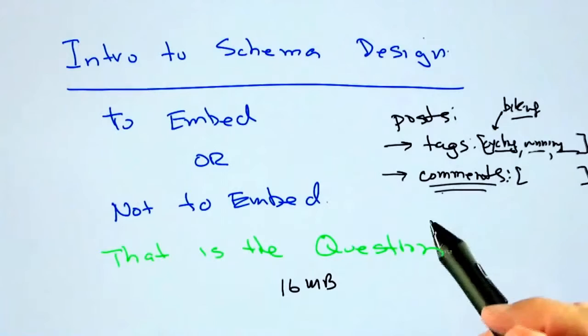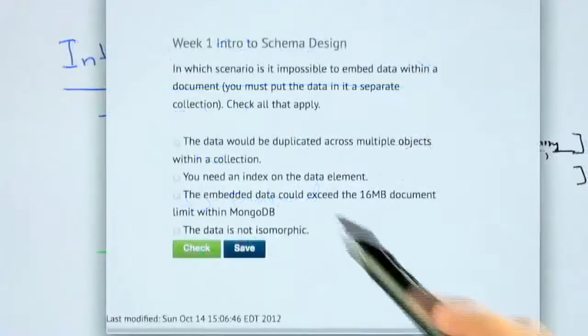So now it's time for a quiz. In which scenario is it impossible to embed data within a document? That is, in which scenario do you have to put the data in a separate collection? Check all that apply.